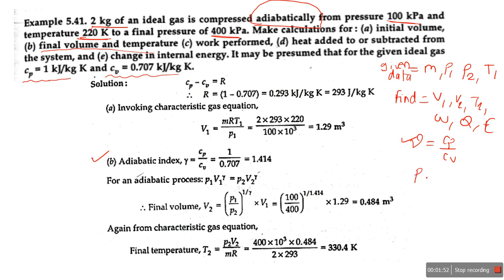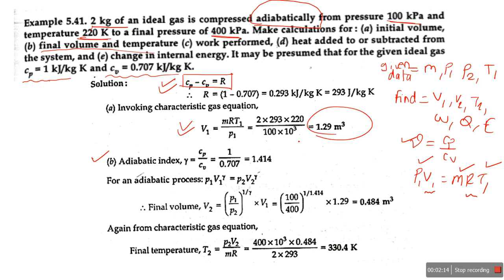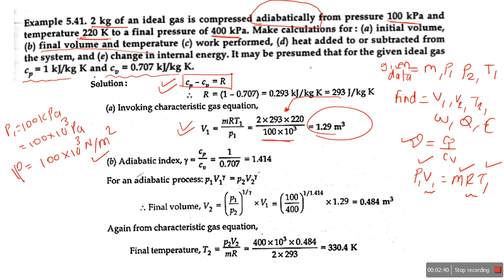For calculating initial volume V1, I use the general characteristic gas equation: P1V1 = mRT1. P1 is with us, mass is given, T1 is given, the unknowns are V1 and R. First calculate R by the relation CP minus CV equals R, then calculate V1. Putting the values we get a value around 1.29 cubic meters. We convert pressure to Newton per meter squared: 100 kilopascal equals 100×10³ Pascal, and 1 Pascal equals 1 Newton per meter squared. So the value of R is in joule per kg Kelvin.